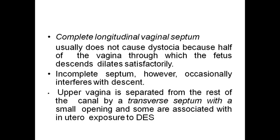Complete longitudinal vaginal septum usually does not cause dystocia because the half of the vagina through which the fetus descends dilates satisfactorily. An incomplete septum, however, occasionally interferes with descent. The upper vagina may be separated from the rest of the canal by a transverse septum with a small opening, and some cases are associated with in utero exposure to diethylstilbestrol.